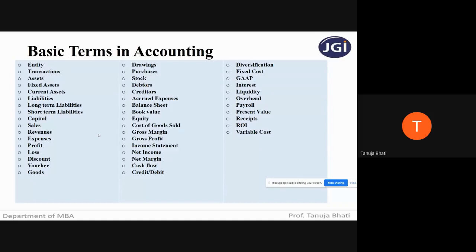Let us go through the basic terms in accounting. Though you all must be aware of these terms, I'll just quickly go through them. First is entity. What do you mean by entity? Entity is nothing but a legal structure or a type of a business. Entities can either be a sole proprietor, a partnership firm, or a limited liability company.